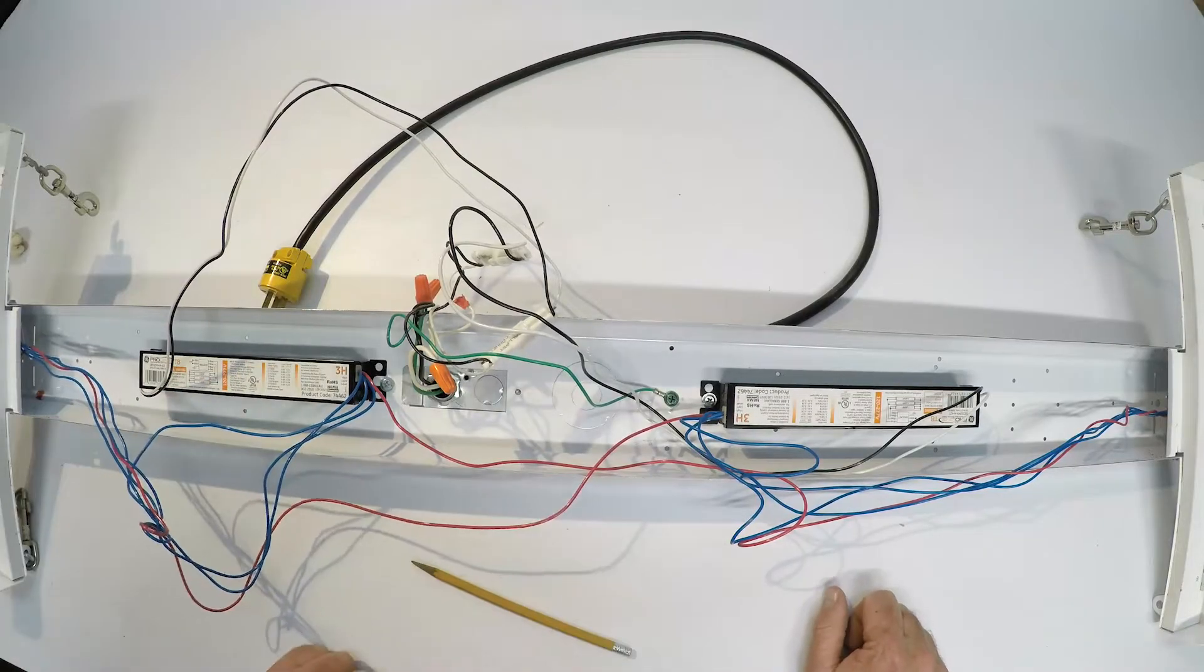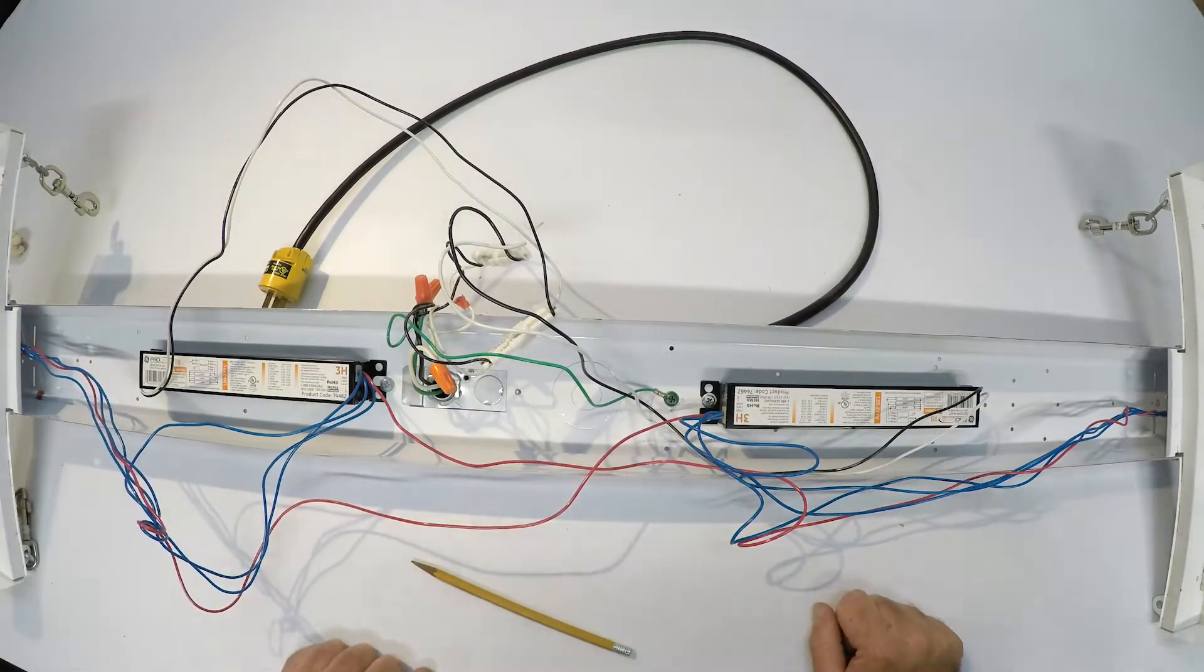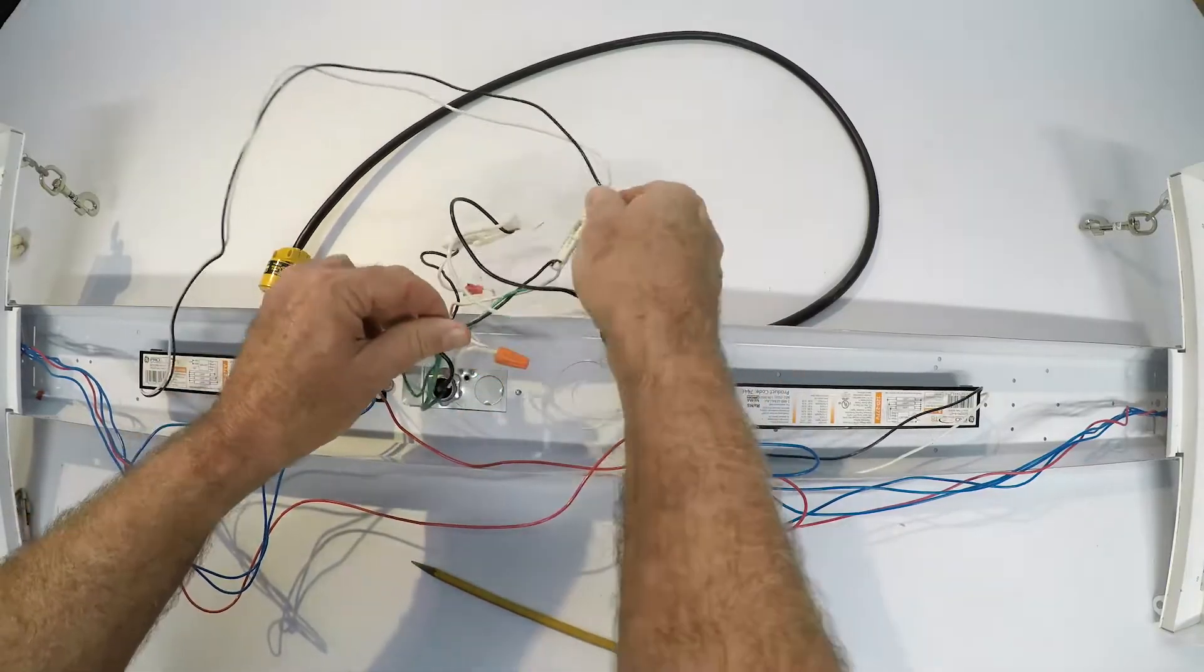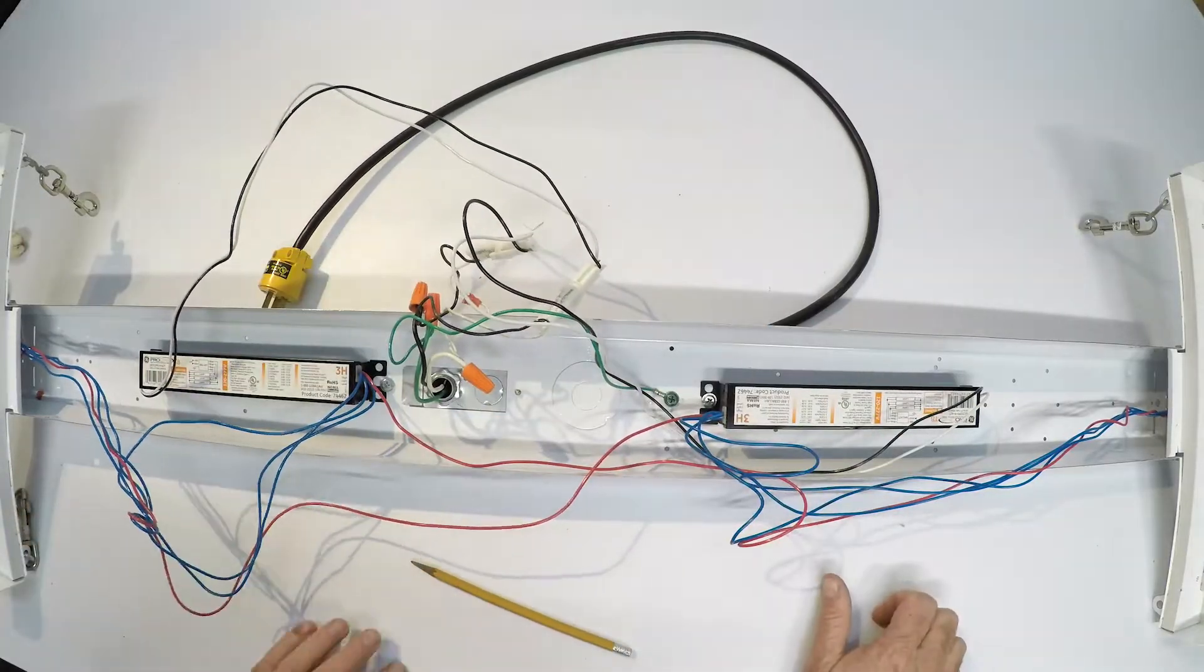I'm going to go ahead and remove both ballasts. I'm going to cut the wires. We're going to remove these wire nuts and expose some of this so you can get a clearer indication.